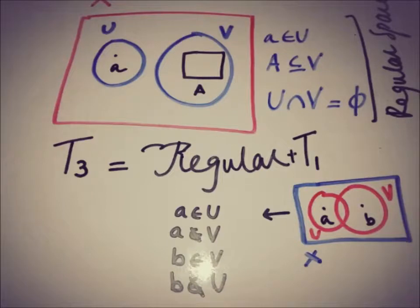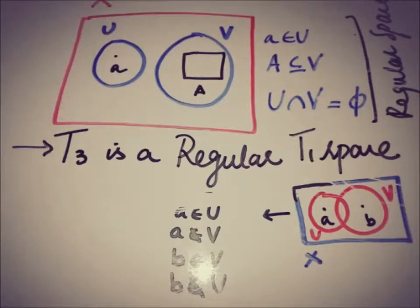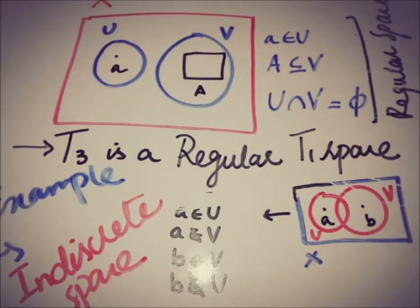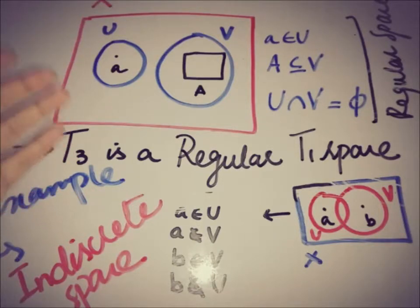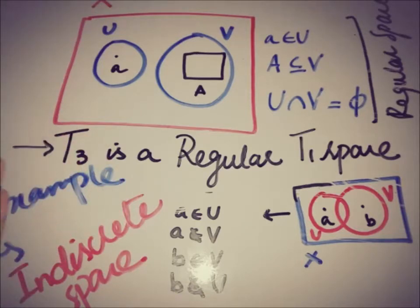One open set must contain the point and the other open set must contain or be a superset of the closed set. Now, talking about an example of a regular space: a very trivial example is that of the indiscrete space. The indiscrete space contains only the empty set and the set X. This is trivially a regular space because there is no closed set that is disjoint from a chosen point, since the only non-empty closed set is X itself in the indiscrete space.